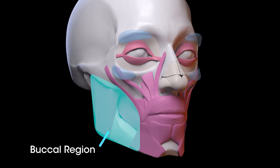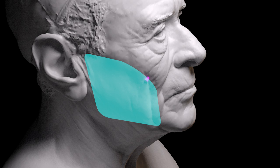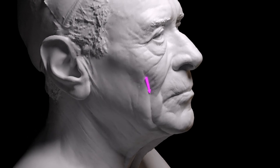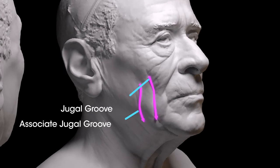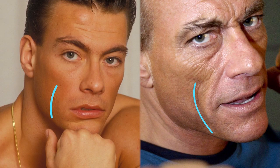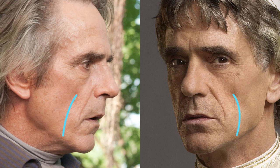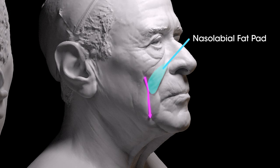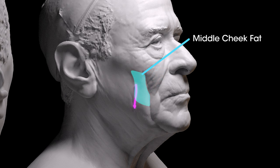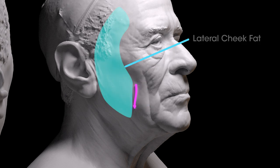If we look at the buccal region of the face, there are two lines that can really help you make sense of the folds in an older person's face. They're called the jugal groove and the associate jugal groove. I have to warn you — I saw these in an anatomy text a long time ago and haven't seen them since, but they exist. If you look at Jean-Claude Van Damme or Jeremy Irons, they're right there. The jugal groove separates the nasolabial fat pad and the medial fat pad from the middle cheek fat pad, and the associate jugal groove separates the middle cheek fat pad from the lateral temporal and cheek fat pad coming around the outside of the face.